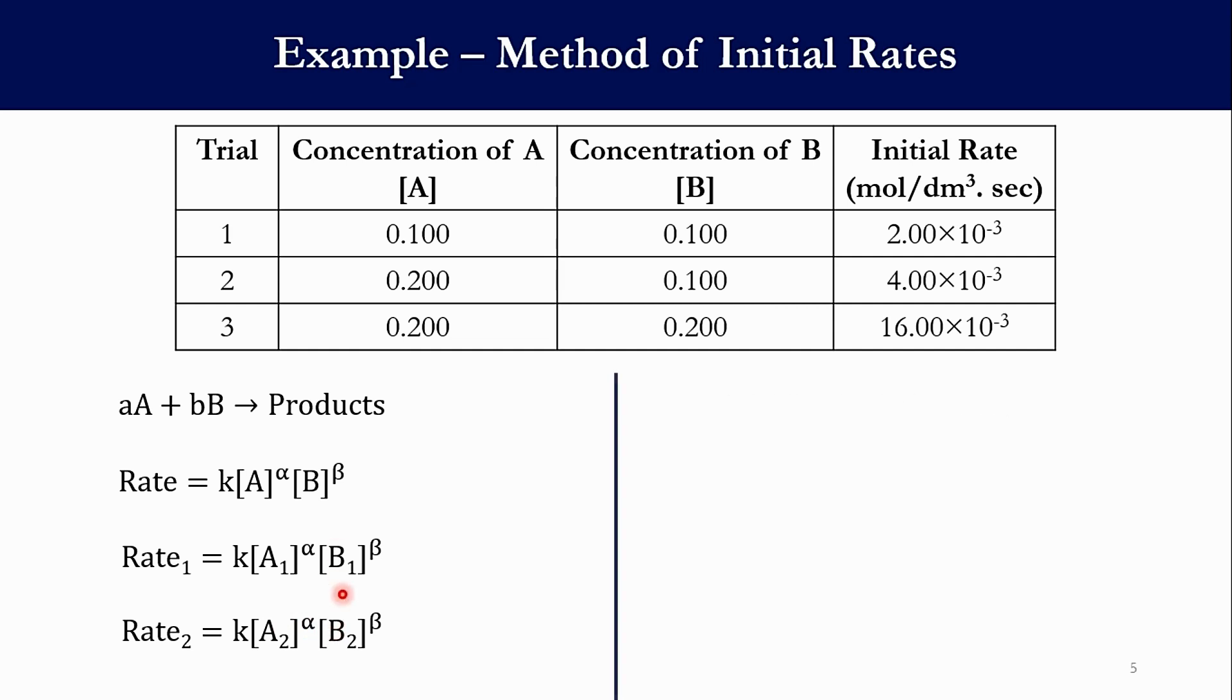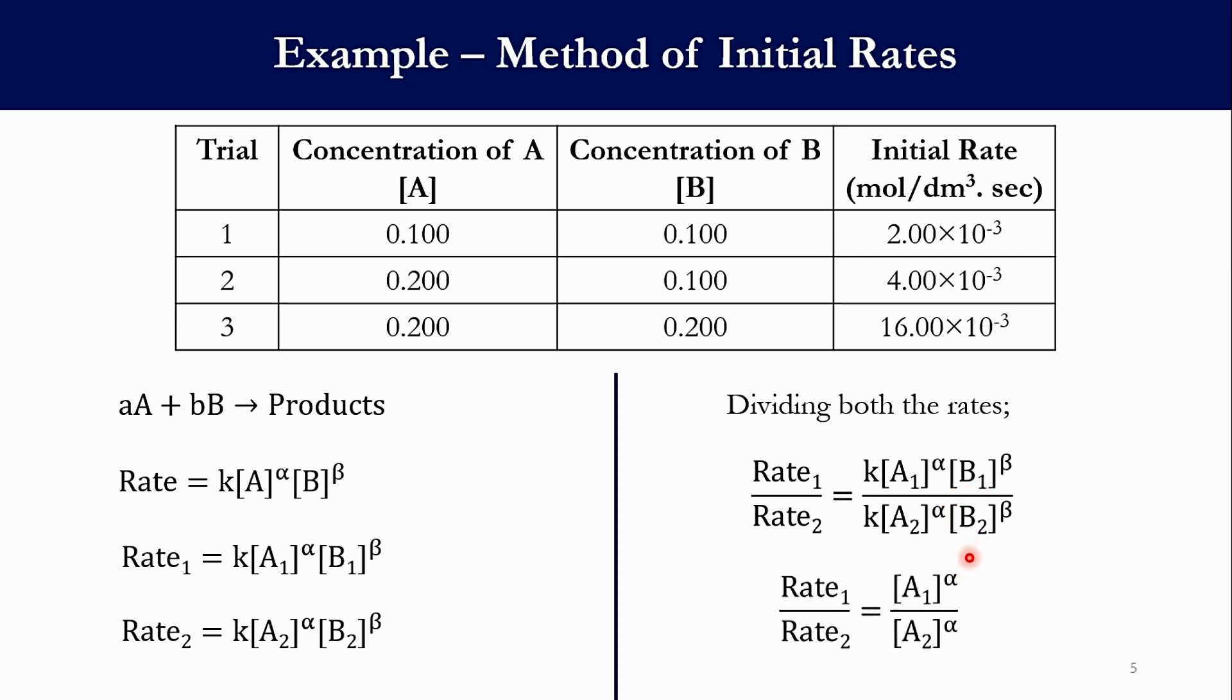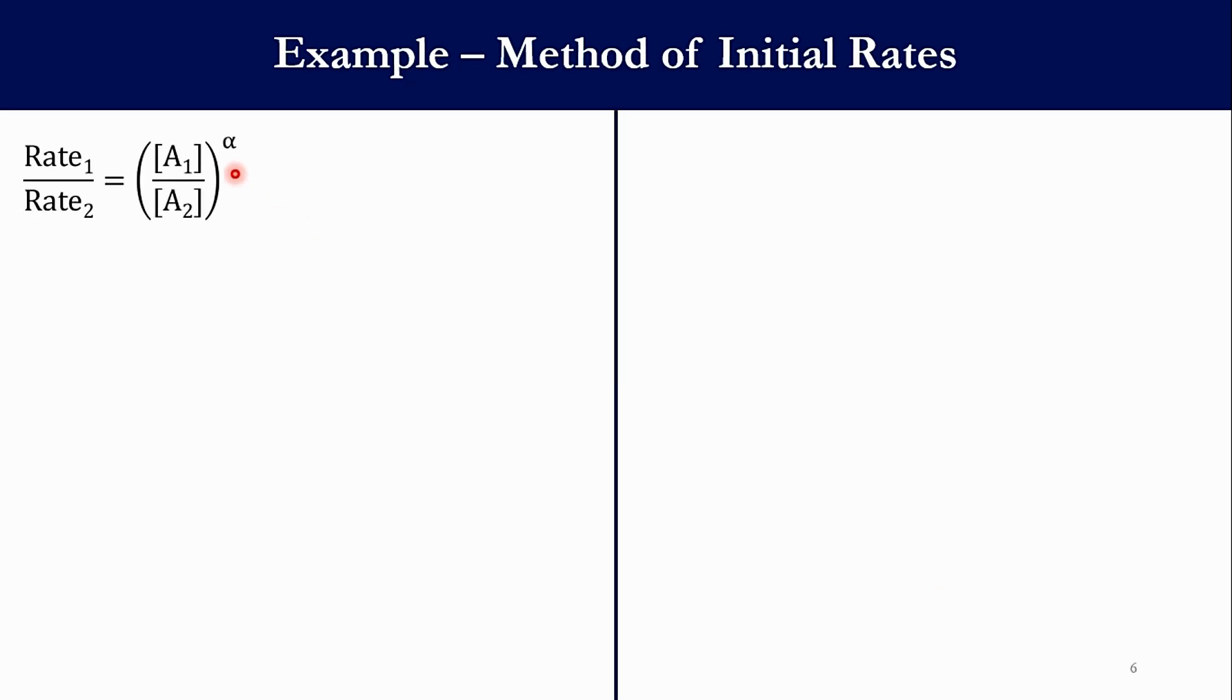Now if we divide these two, what we get: Rate₁/Rate₂ = K[A₁]^α[B₁]^β divided by K[A₂]^α[B₂]^β. Now this K will cancel out with this K. And if you see that for first trial and for second trial, the concentration of B is same, so obviously these two parameters will be cancelled out. So accordingly we get Rate₁/Rate₂ = ([A₁]/[A₂])^α, or we can write it as Rate₁/Rate₂ = ([A₁]/[A₂])^α.